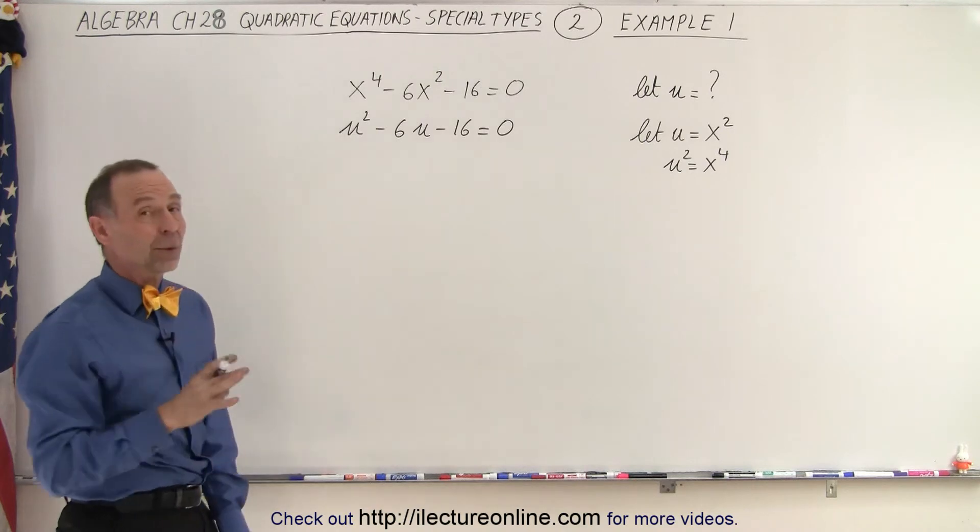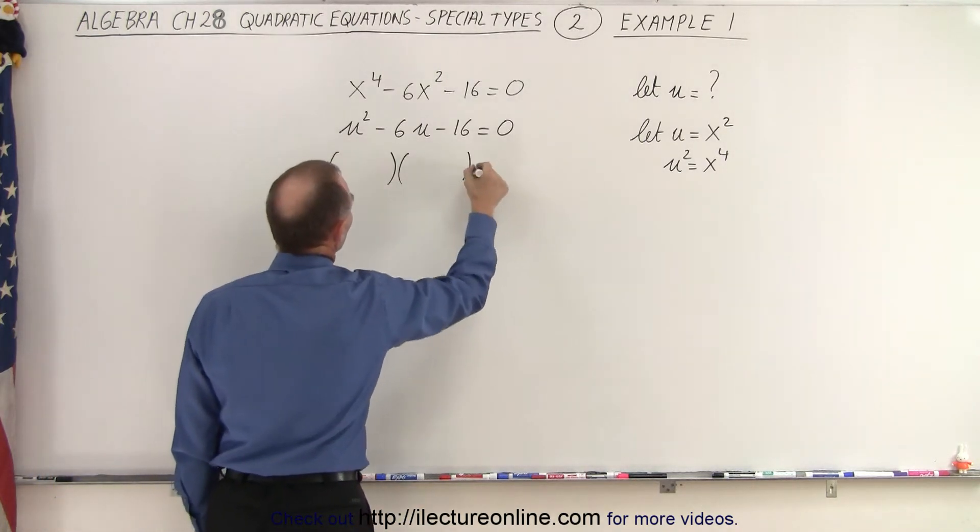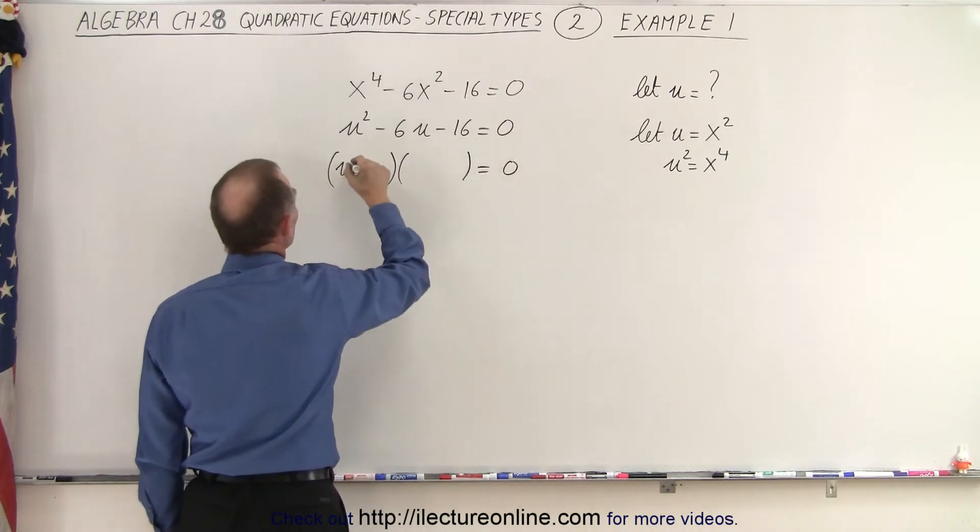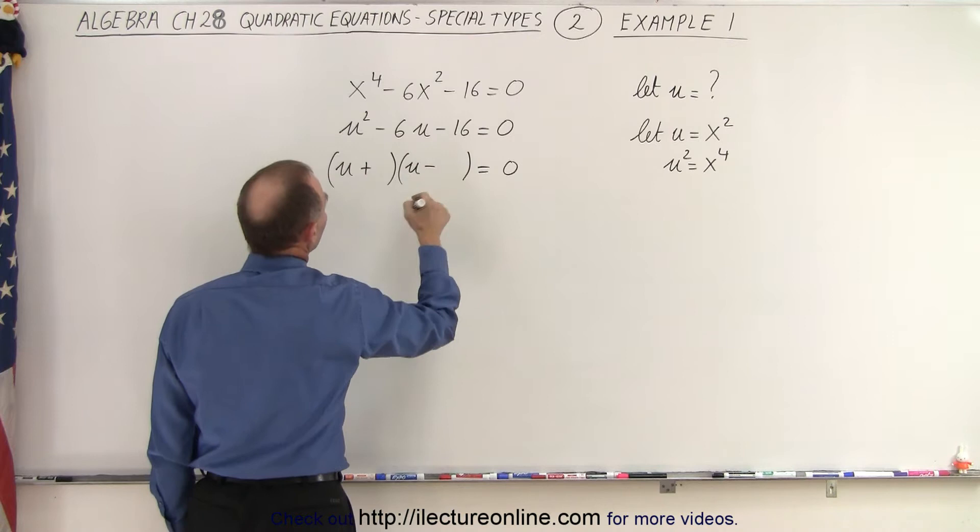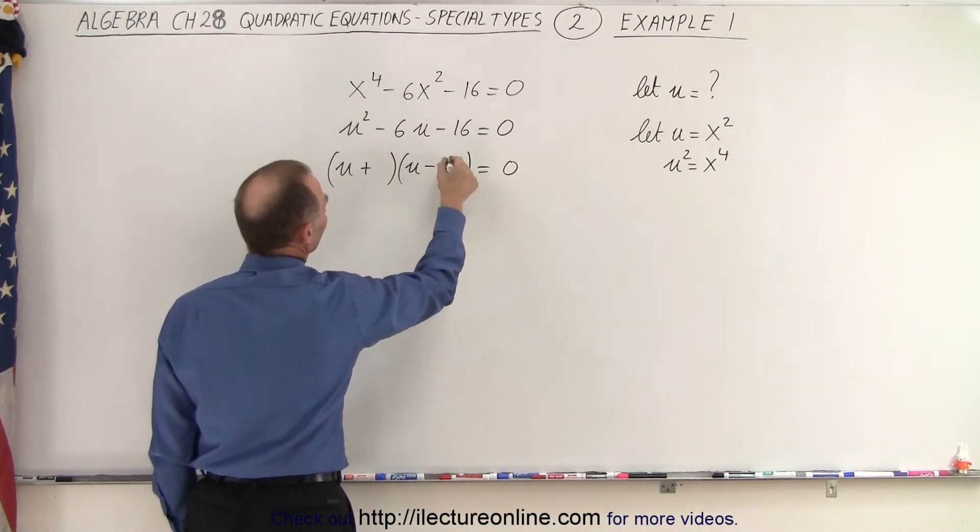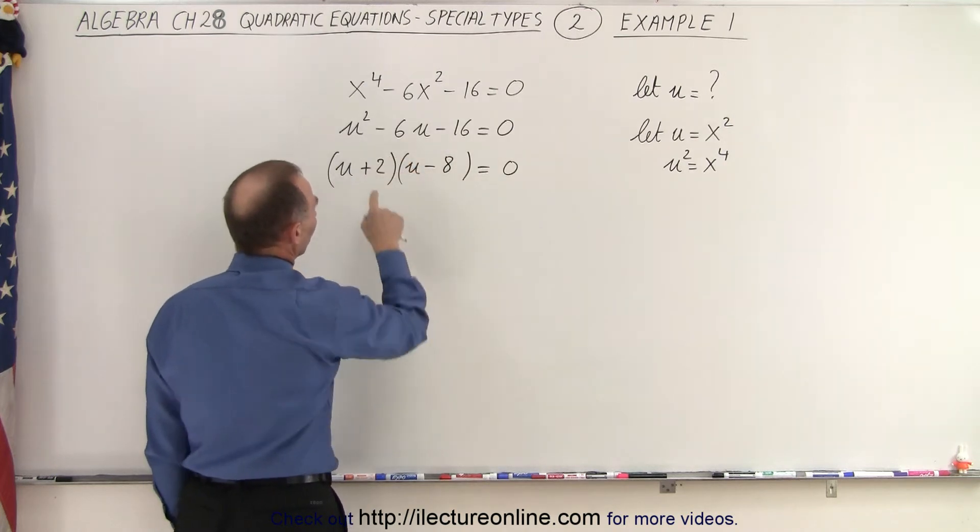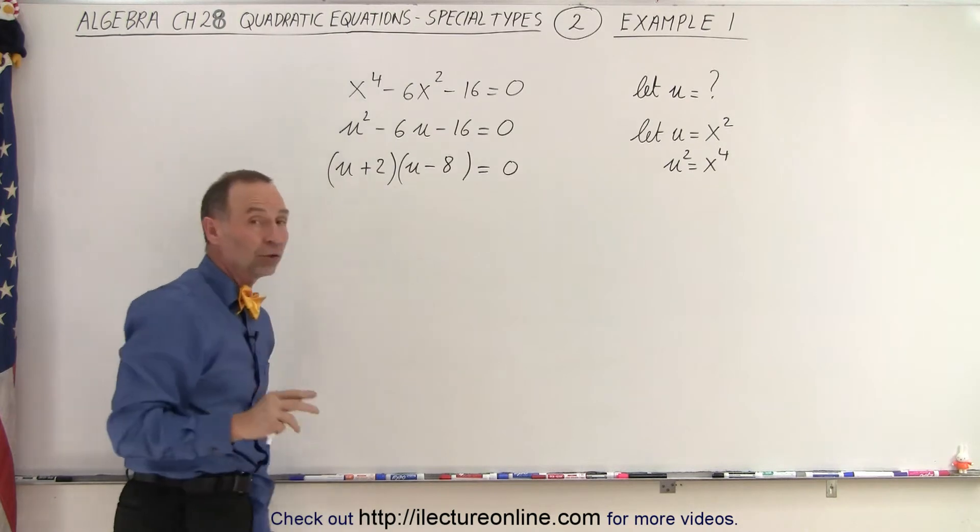It looks like we can factor that one, so let's try that. So we're going to end up with two binomials. It's factorable. We have a u and a u. Sign-wise, we need a positive and a negative. When I multiply, I get negative 16. Add, I get negative 6. So a negative 8 and a positive 2 will do it. When I multiply, I get negative 16. When I add, I get minus 6. So from this,